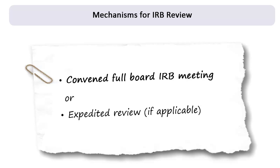Human subjects research that requires IRB review may be reviewed at a convened IRB meeting or, if it qualifies for expedited review, by the IRB chair or an experienced IRB member or members designated by the IRB chair. This tutorial focuses on the requirements for reviewing research at convened meetings.